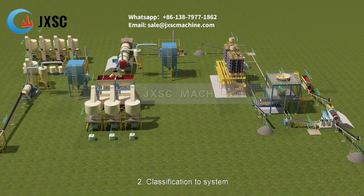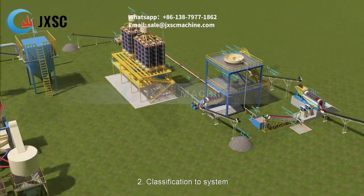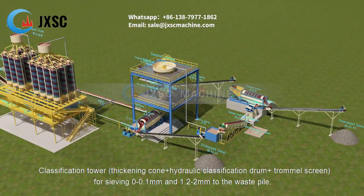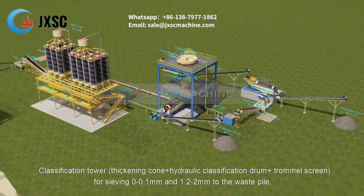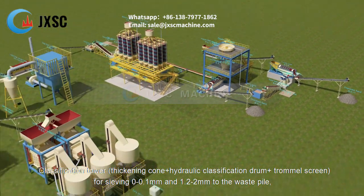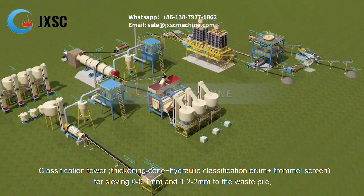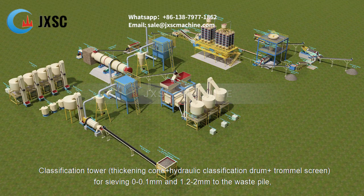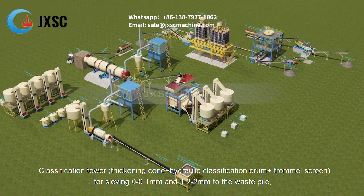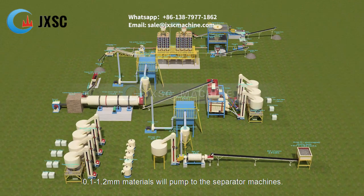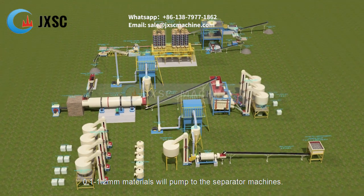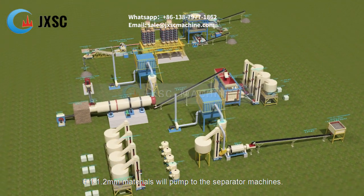2. Classification system. Classification tower — thickening cone plus hydraulic classification drum plus trommel screen — for sieving 0 to 0.1 millimeters and 1.2 to 2 millimeters to the waste pile. The 0.1 to 1.2 millimeters materials will be pumped to the separator machines.